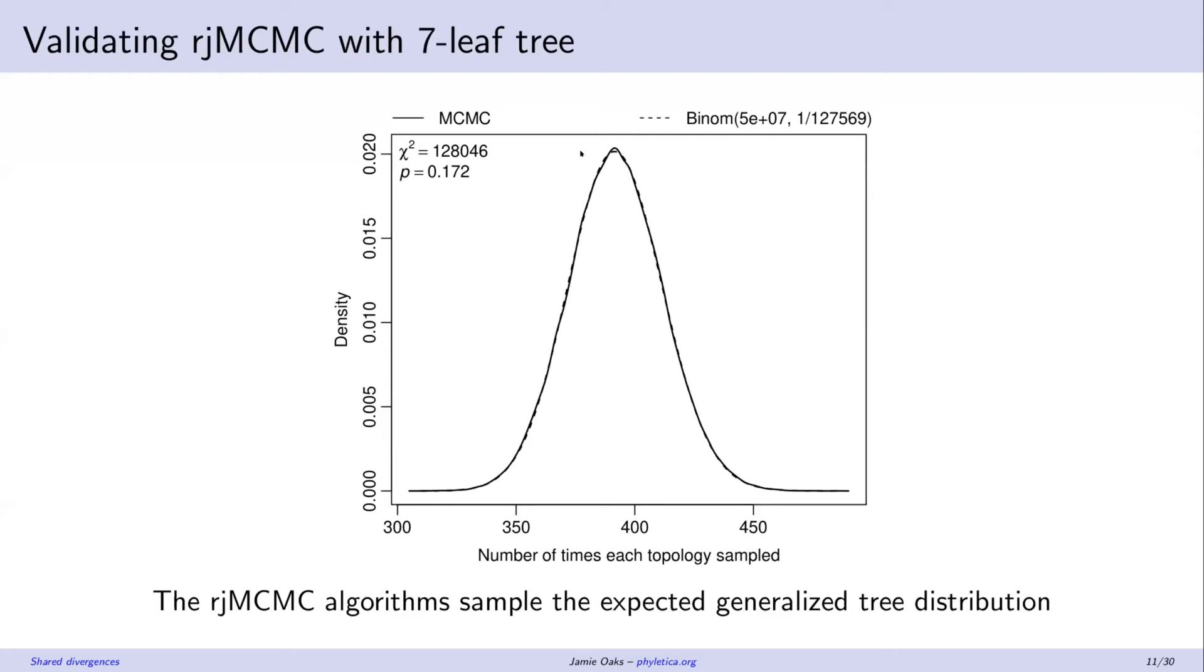And as we can see here, the dotted line is showing us the expectation and the solid line is showing us what we're actually getting with our algorithms. So we're spot on. We can't reject that we're sampling from the expected distribution with a chi-square goodness of fit test. And so things look good. We've done other validations, making sure that divergence times are being sampled from their expected distributions as well.